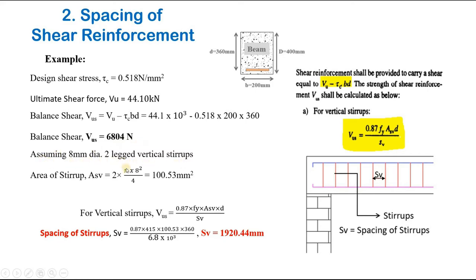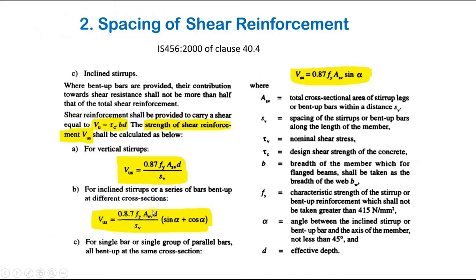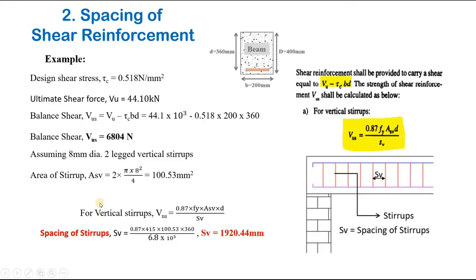Assuming 8 mm diameter two-legged vertical stirrups, the area of stirrups ASV is 100.53 mm². For vertical stirrups, substituting all values into the formula gives a spacing SV of 1920.44 mm. For inclined stirrups using the inclined stirrups formula with α = 45°, the spacing SV is similarly calculated. This is how spacing of shear reinforcement is calculated using the balance shear VUS method.